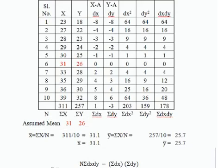Subtract the assumed mean 31 from each X value to get dx: 23−31=−8, 27−31=−4, 28−31=−3, 29−31=−2, 30−31=−1, 31−31=0, 33−31=2, 35−31=4, 36−31=5, and 39−31=8.